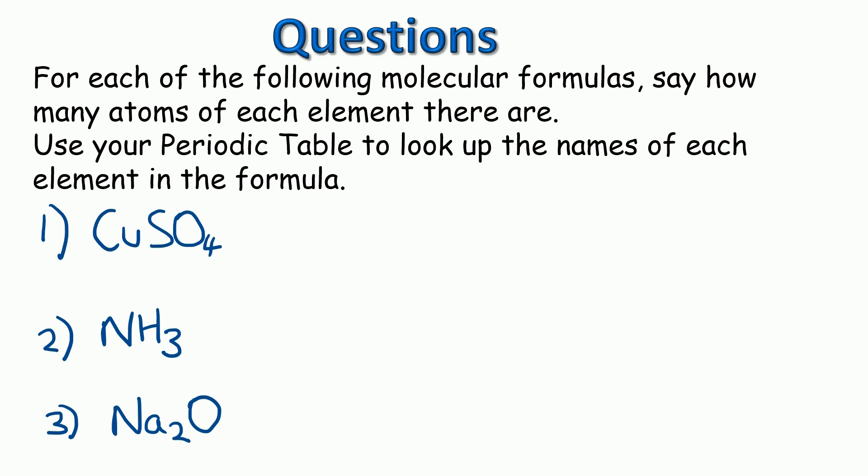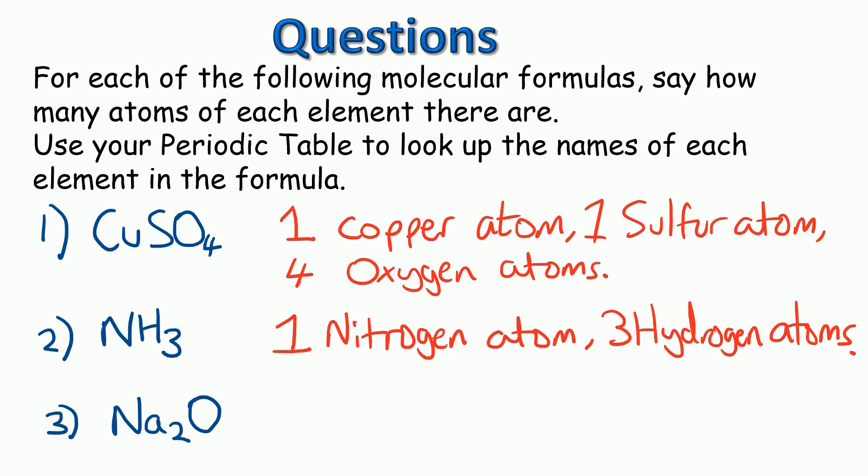So the answer to the first one is one copper atom, one sulfur atom, and four oxygen atoms. The second one is one nitrogen atom and three hydrogen atoms. And the third one is two sodium atoms and one oxygen atom. And as we can see, a little reminder, if there's no number after the letters, it means there's just one of that type of atom.